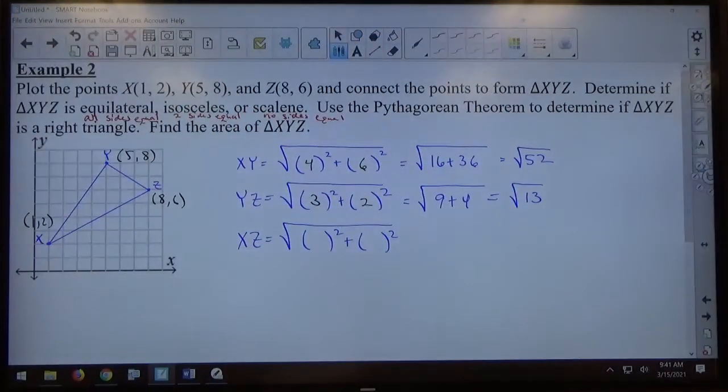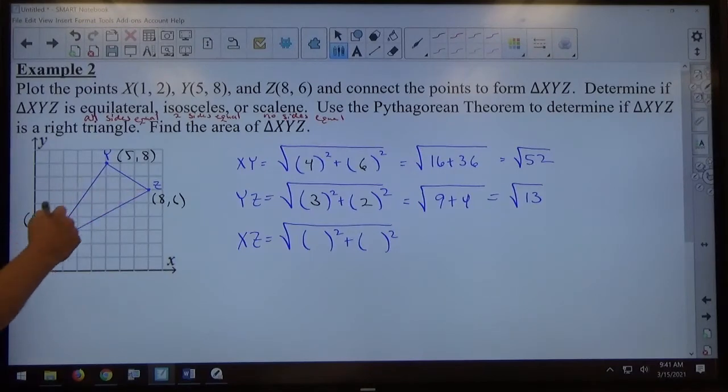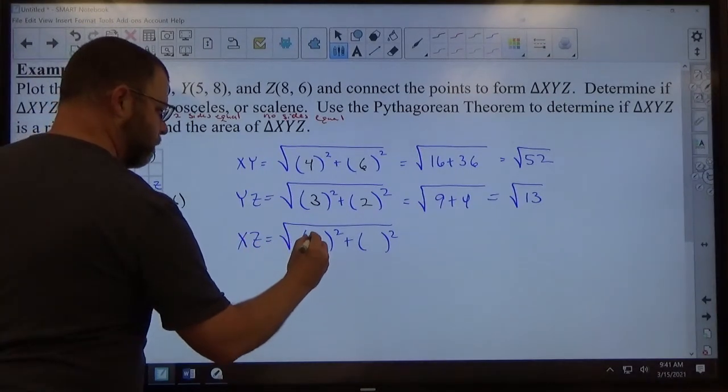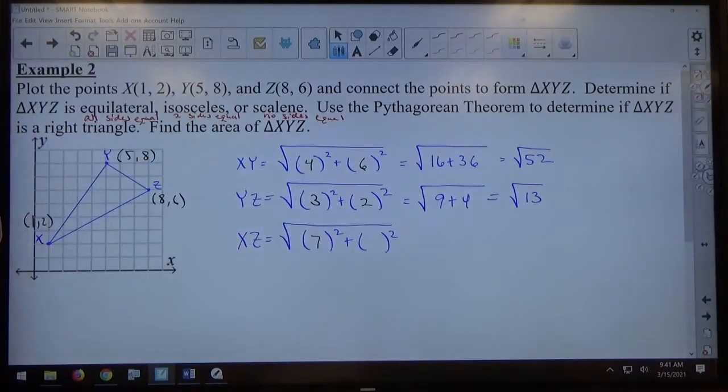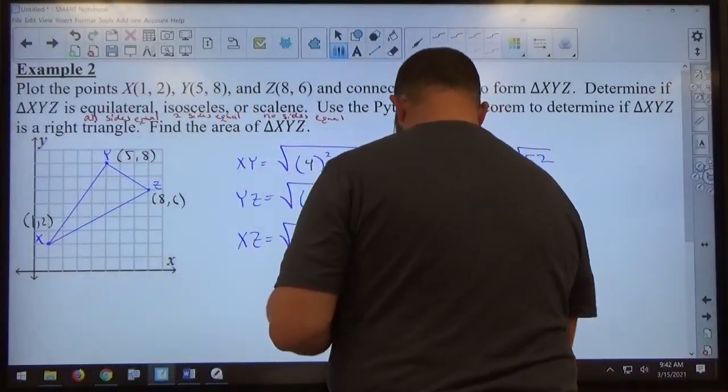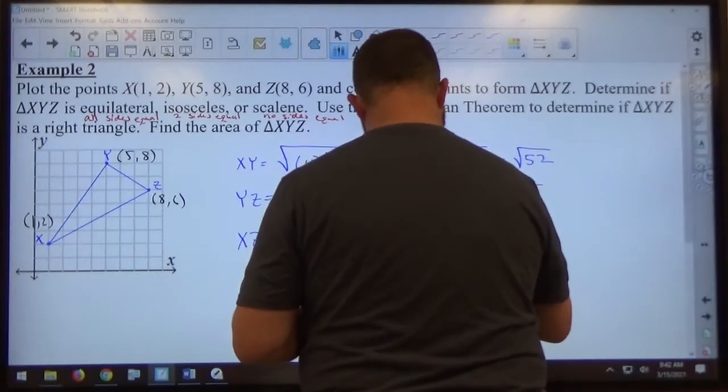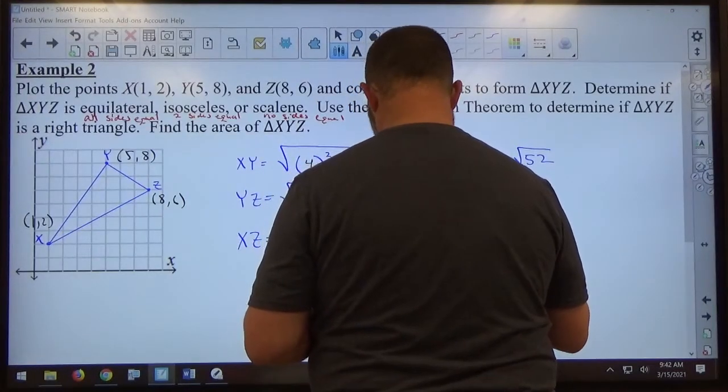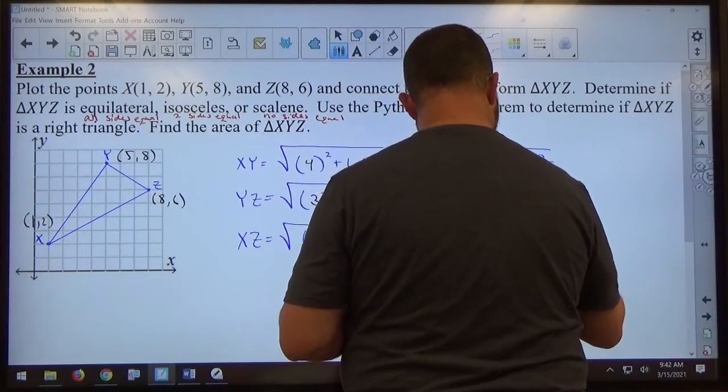And then finally, if you look at XZ, how far is it from 1 to 8? 7. And how far is it from 2 to 6? 4. That gives me the square root of 49 plus 16, which is the square root of 65.